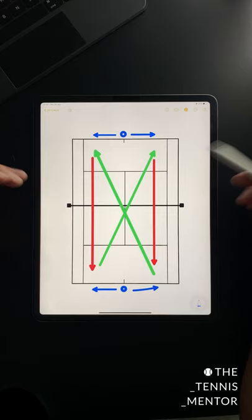When you do this drill, make sure you change ends so that you get to practice both hitting cross court and down the line.